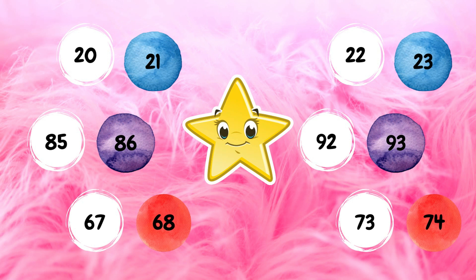85 comes before 86, 67 comes before 68, 22 comes before 23, 92 comes before 93, and 73 comes before 74. These were some main and basic examples of what comes before.